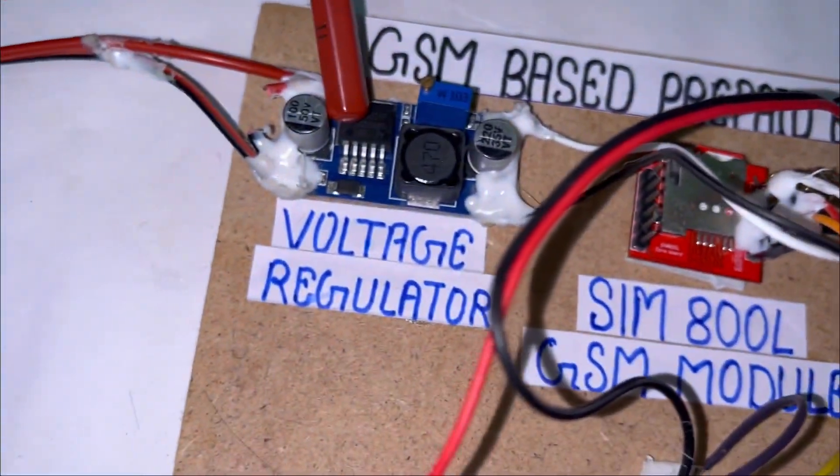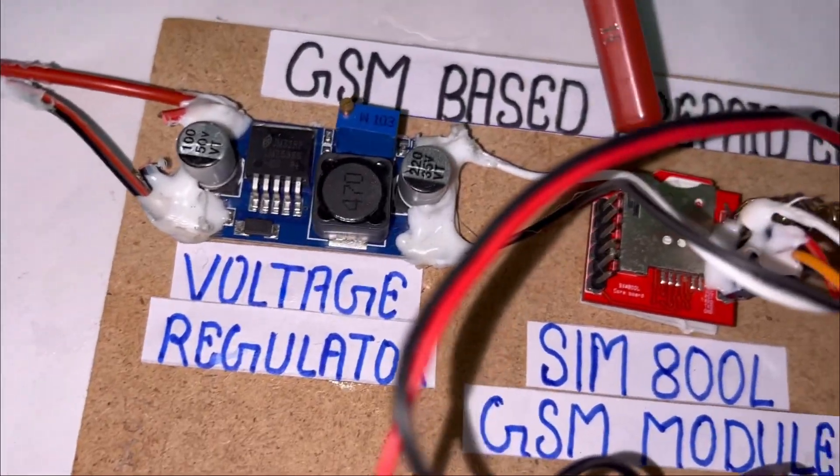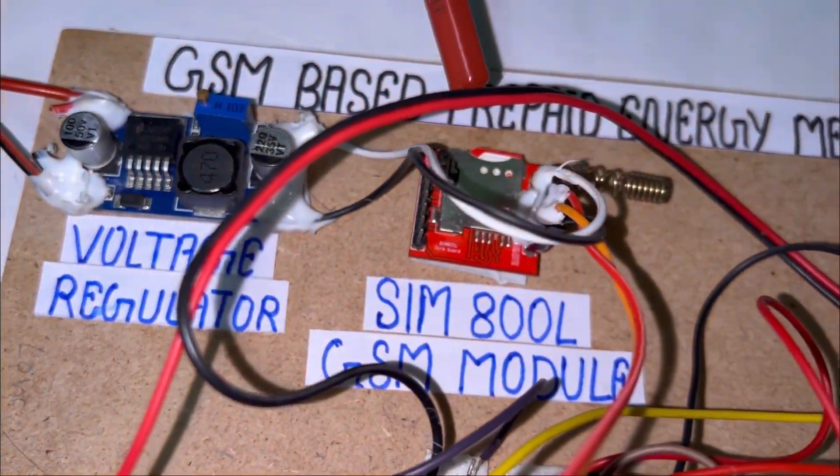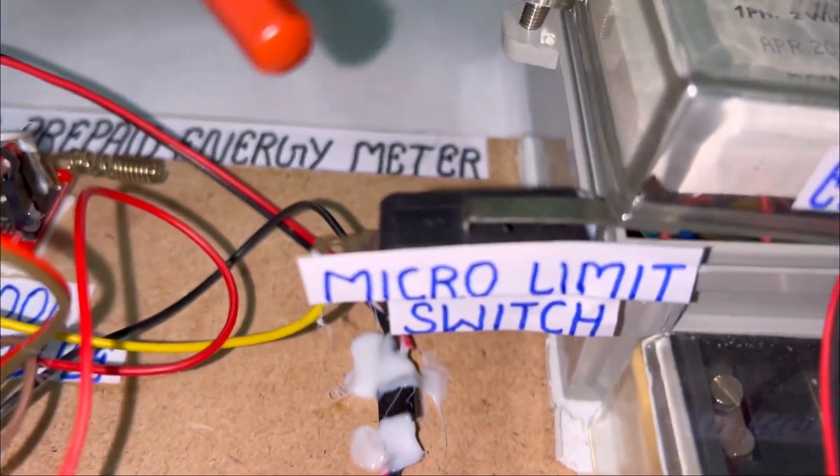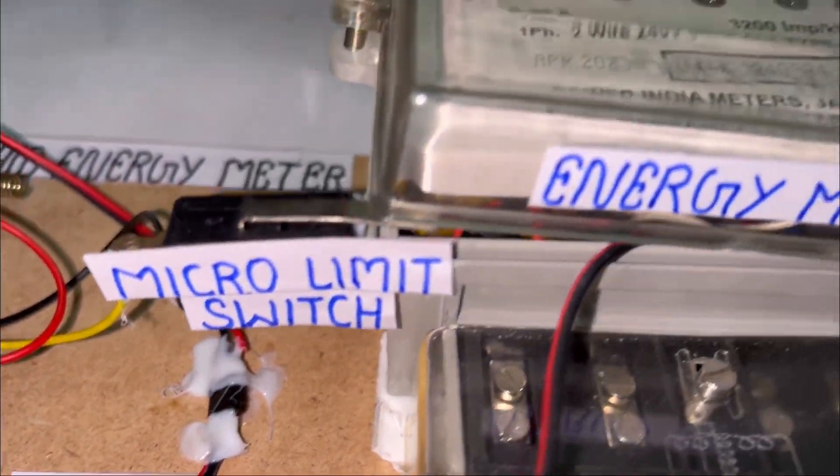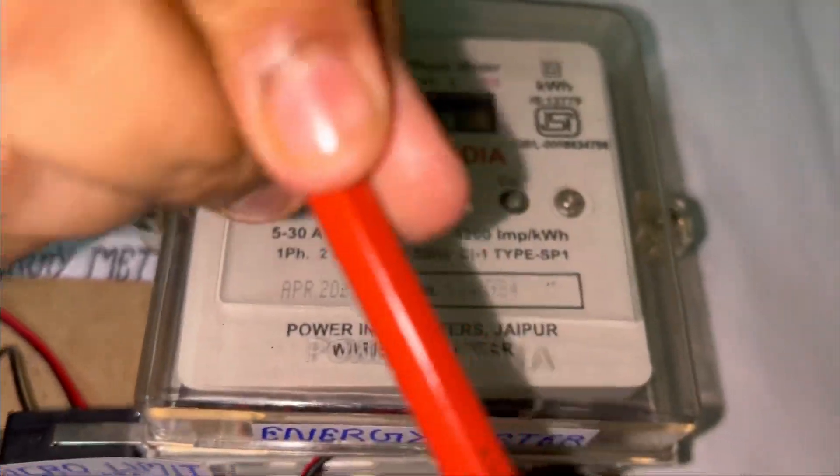Here is the voltage regulator because it accepts only 3.4 to 4.4 volts. Here is the micro limit switch which is used for the anti-theft. Here is the energy meter and here is the load.